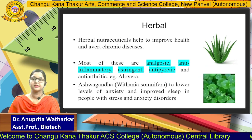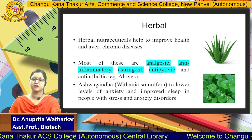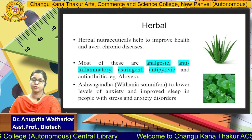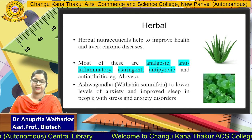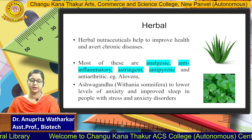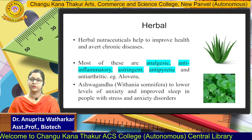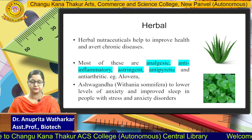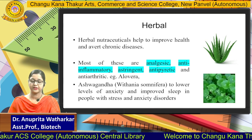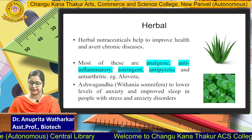Herbal nutraceuticals come from many herbal plants that have unique bioactive compounds showing good effects on our health. For example, most of these are analgesic, anti-inflammatory, astringent, antipyretic, and anti-arthritic. Aloe vera is one example. Ashwagandha is also a medicinal plant which lowers anxiety and improves sleep in people with stress and anxiety disorders.